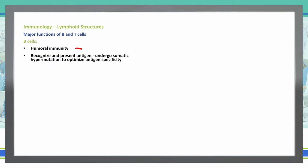Let's continue on and talk about our B cells and T cells of our lymphoid structures. B cells specifically function for humoral immunity. They recognize and present the antigen and undergo somatic hypermutation, which optimizes antigen specificity. Essentially, our B cells produce our antibodies. The antibodies then differentiate into plasma cells that can secrete specific immunoglobulins — your IgG, your IgM, your IgA — all from our B cells, part of that humoral immune system.